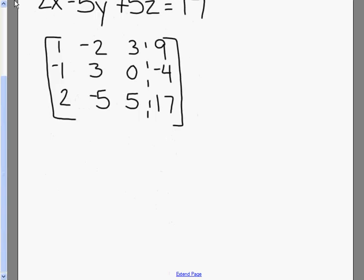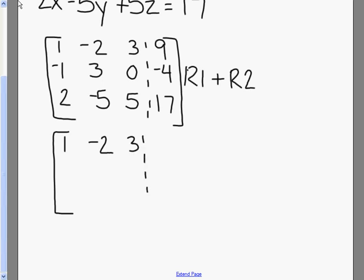Now what we want to do is we want to get 1's in the diagonal, and then everything else is going to be 0. So we have a 1 in the first spot, and I want to make that negative 1 below it to be a 0. So all I'm going to do is take row 1 and plus row 2. And we're going to write a new matrix. Now our first row stays the same. Our second row now becomes 0, 1, 3, 5, and our last row is going to stay the same.